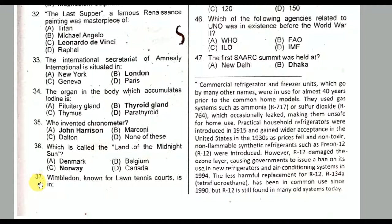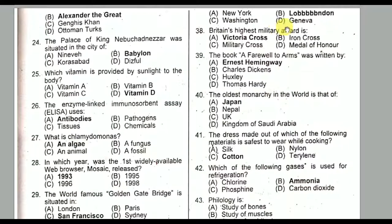Question number thirty-seven: Wimbledon, known for its lawn tennis courts, is in London. Option B is the correct option.